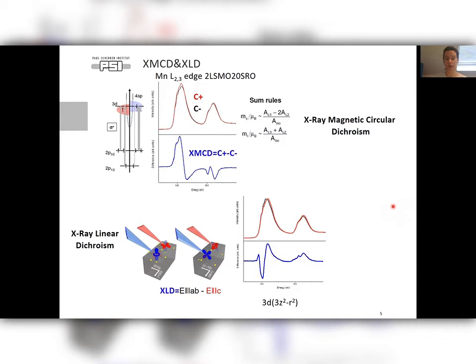Qualitatively, if L2 points up, then 3z-square minus r-square or out-of-plane orbital is more occupied, and if L2 points down, then in-plane or x-square minus y-square orbital is more occupied.